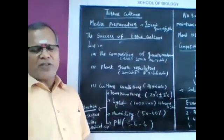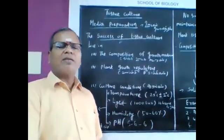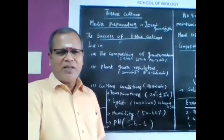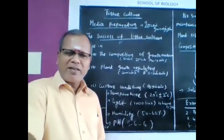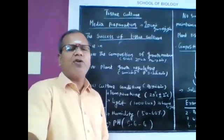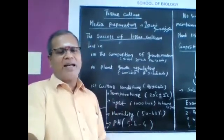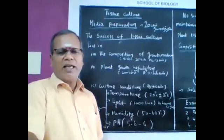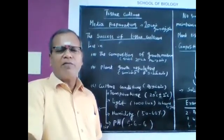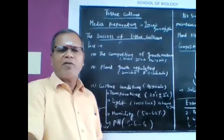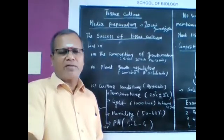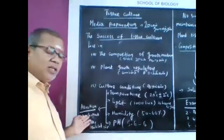The conditions: temperature 25 plus or minus, light intensity 2000 to 4000 lux, and uninterrupted artificial lighting. Humidity 50 to 60%, pH will be around 5.6 to 6.